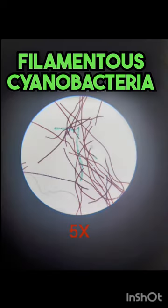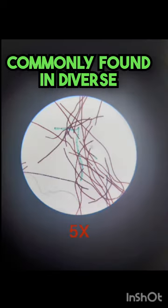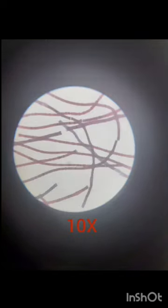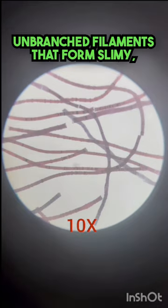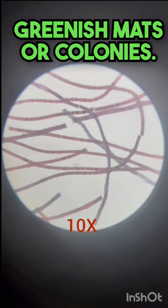Oscillatoria is a genus of filamentous cyanobacteria commonly found in diverse aquatic environments. These microorganisms are characterized by long, unbranched filaments that form slimy, greenish mats or colonies.